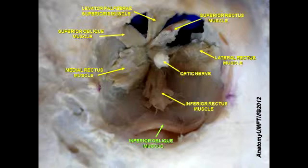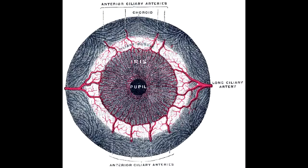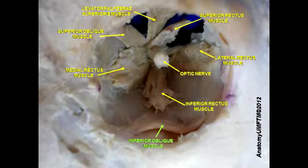Other functions include pupillary constriction via innervation of the sphincter papillae muscle — the iris sphincter muscle — which has the Edinger-Westphal nucleus and muscarinic receptors. Additional functions include accommodation and eyelid opening due to its innervation of the levator palpebrae superioris muscle.